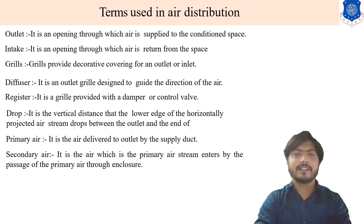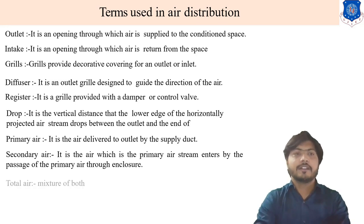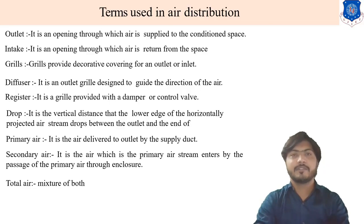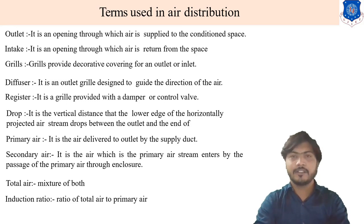Next is secondary air. Secondary air is the air which is entrained by the primary air stream through the passage of primary air through the enclosure. Next is total air — it is the mixture of primary and secondary air. That is known as total air. Next is induction ratio — it is the ratio of total air to primary air.